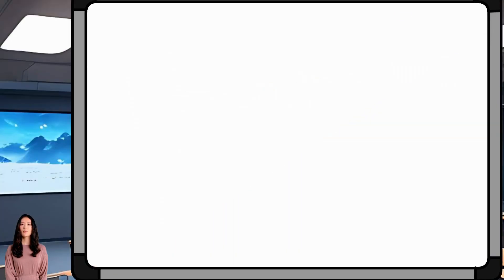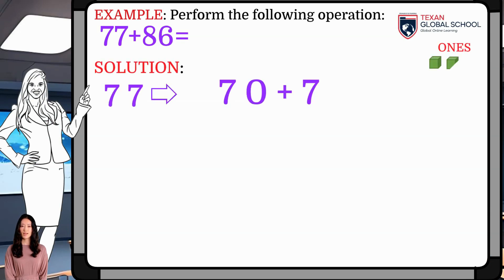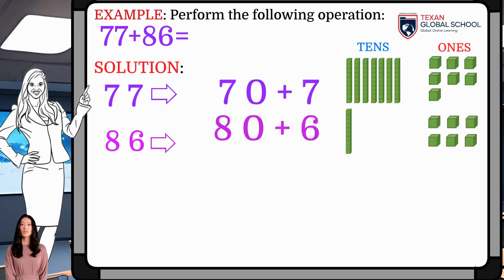Now, we will add 77 plus 86. First, decompose each addend into 1s and 10s. 77 has 7 1s and 7 10s. 86 has 6 1s and 8 10s. We will use the bars in each case to see the model.